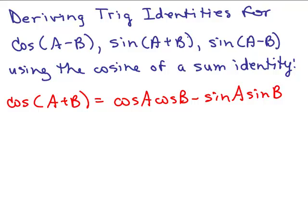In another video, I derived the formula for the cosine of a plus b — the cosine of the sum of two angles — and we got cosine a cosine b minus sine a sine b. Using this identity which was already derived, we're going to now derive the formula for the cosine of a minus b, the sine of a plus b, and the sine of a minus b. We'll be using a couple of other identities to do that.